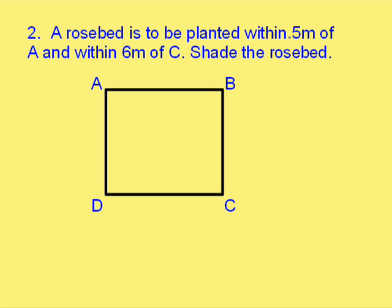it's got to be inside a circle of radius five from A. So, it's got to be inside that circle. Of course, it's inside the garden, so it's just going to be in this region.